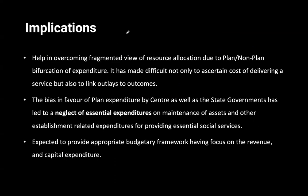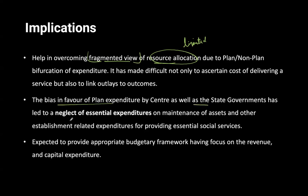The implications we need to understand are: it helped in overcoming our fragmented view of resource allocation. Since resources are limited and scarce in nature, it is important that we are efficiently and judiciously utilizing our resources. We overcame this fragmented view, and the bias that was in favor of planned expenditure by the center as well as the state governments had led to the neglect of essential expenditure. Non-planned expenditure got more money, but still essential expenditures were not focused upon.